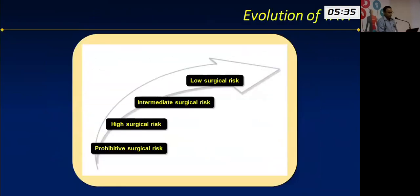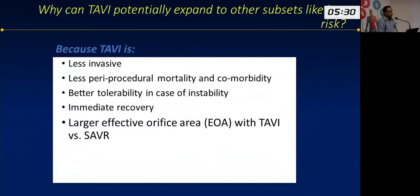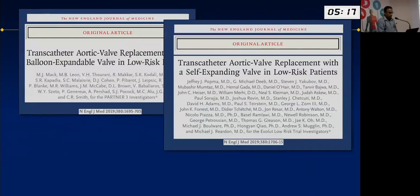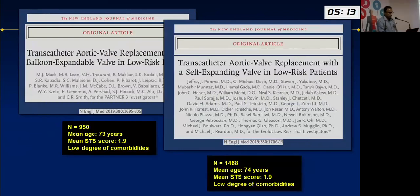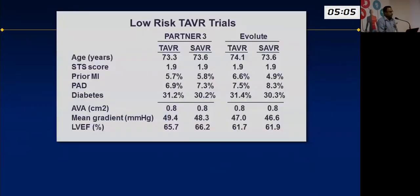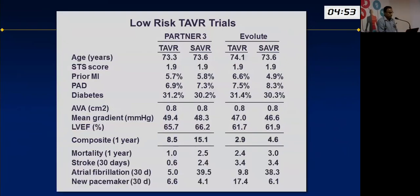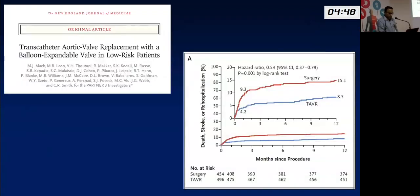Can TAVI be expanded to low-risk patients? Based on available data, this appears feasible. In 2019, two large randomized controlled trials were published — one with a balloon-expandable valve and one with a self-expanding platform. The mean age was 73 to 74 years with very low STS scores, indicating very low-risk patients. One-year composite results again showed superiority of TAVI over surgery even in the lower-risk population, with the balloon-expandable valve performing particularly well, and the benefit occurring very early.